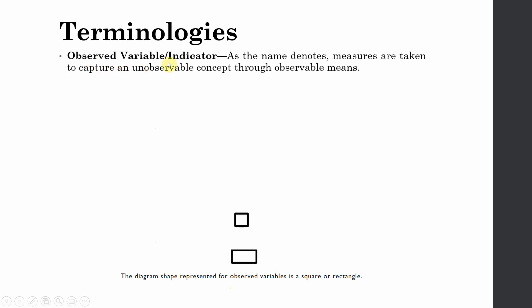Observed variable or indicators: As the name denotes, measures are taken to capture unobservable constructs through observable means. This can be done through survey questions, manipulations, or behavioral tracking.